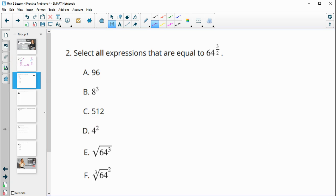Number two, select all expressions that are equal to 64 to the three halves power. So I'm just going to start simplifying this first. So we would have the two as the bottom. So this is really a square root of 64 to the third. And then the square root of 64 is nice. So I'm going to do the square root of 64, which is eight.